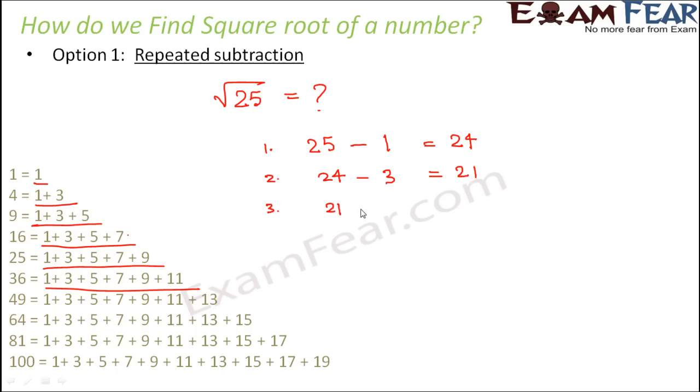In third step we subtract from 21 the next odd number which is 5. So this becomes 16. In fourth step we subtract from 16 the next odd number which is 7. So we get 9.